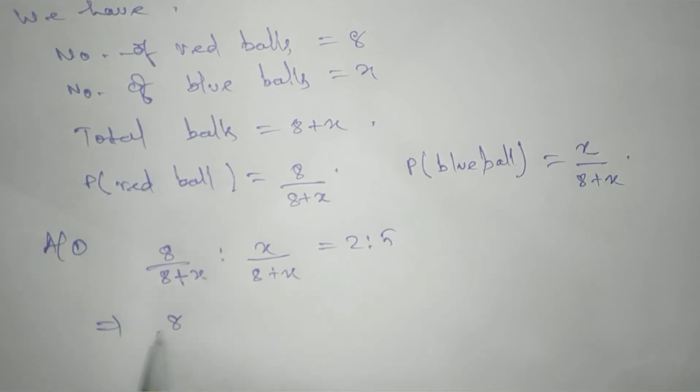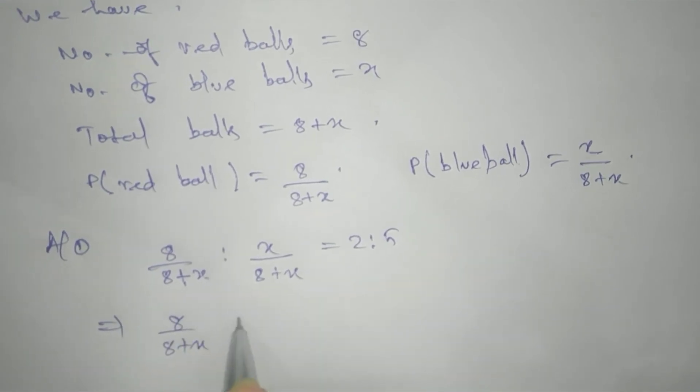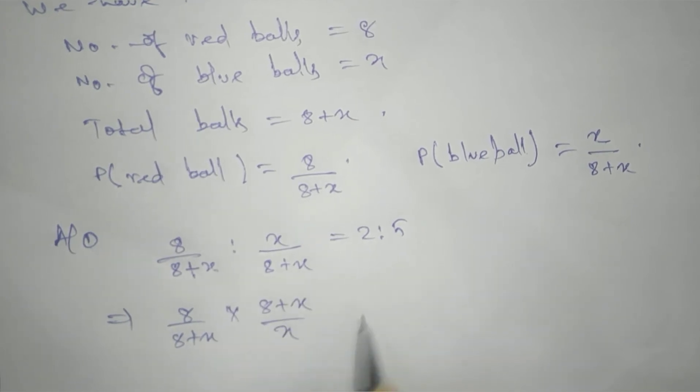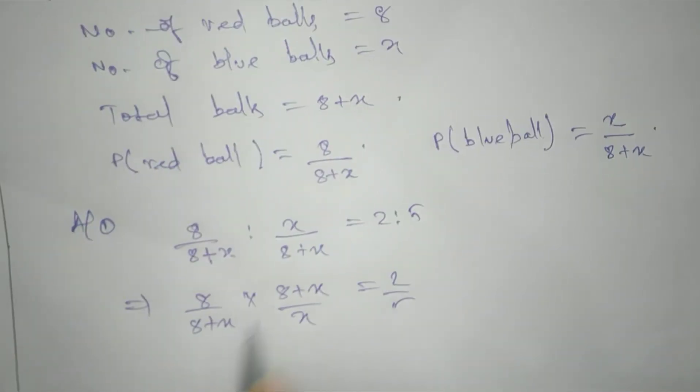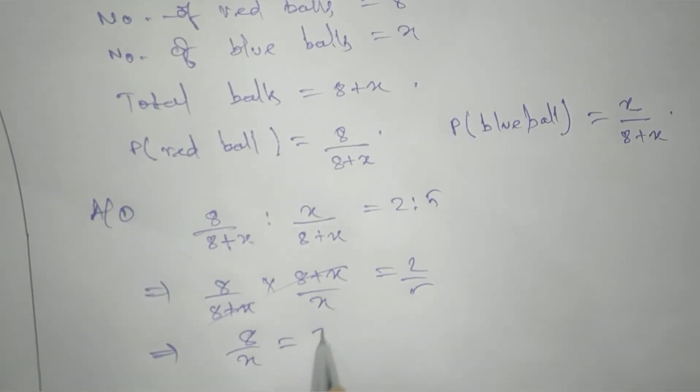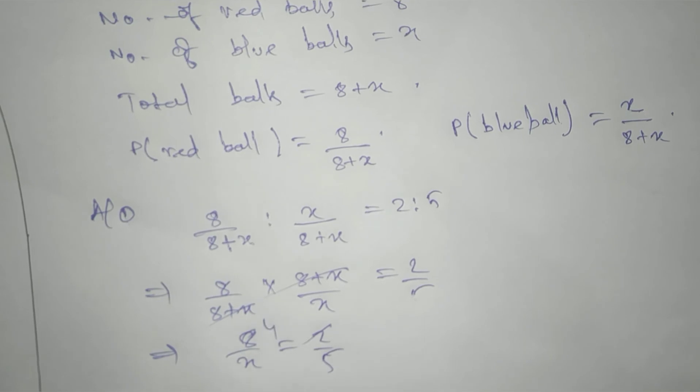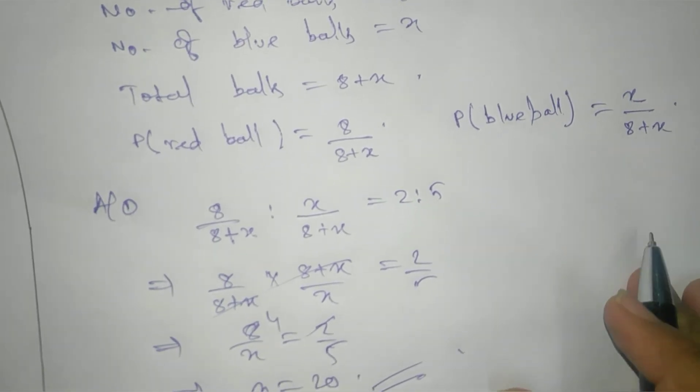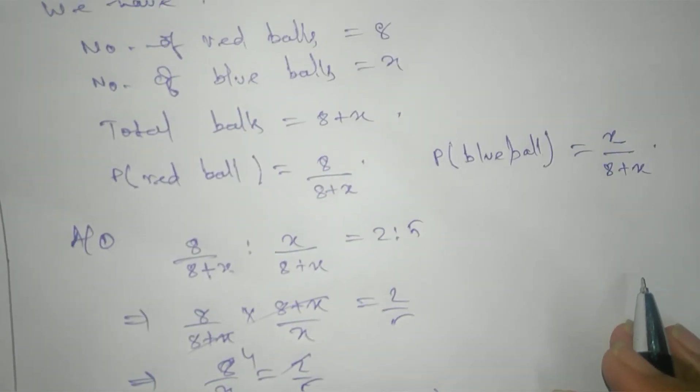This means 8/(8+x) times (8+x)/x equals 2/5. These cancel each other and 8/x equals 2/5. This gives us x equals 20. This is our answer. Thank you.